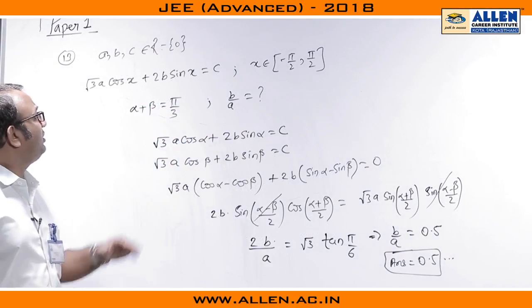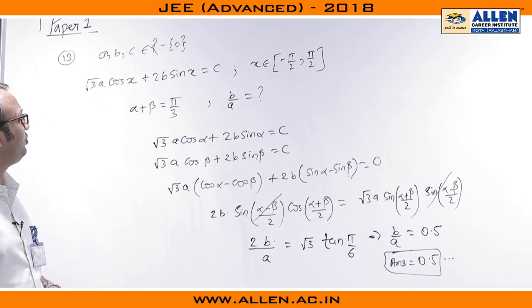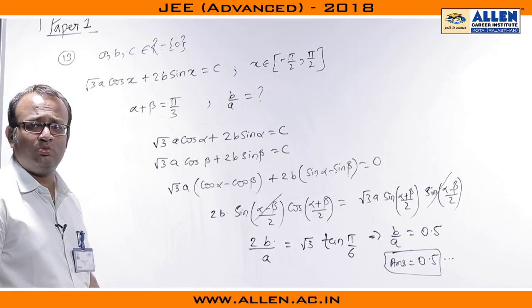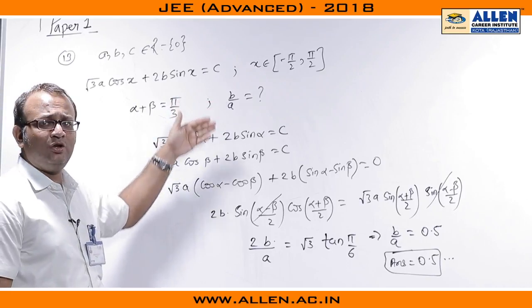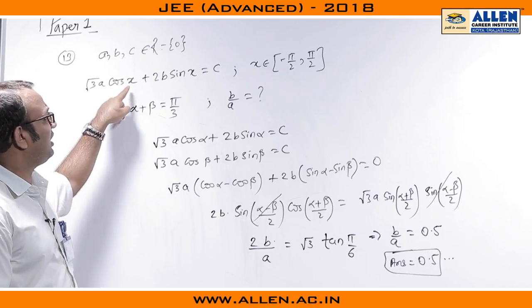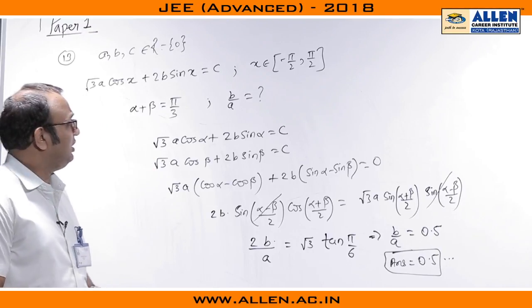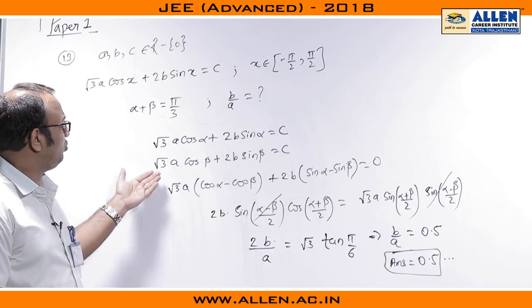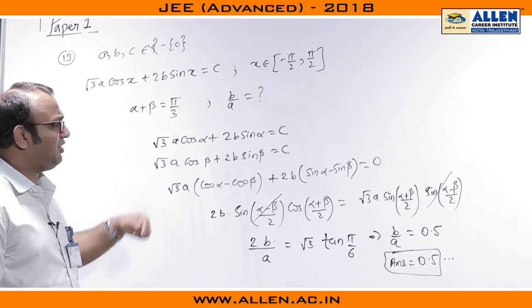In paper 1 question number 13, A, B, C are real numbers excluding 0 and we are given a trigonometric equation root 3 A cos x plus 2 B sin x equal to C and the value of X belongs to minus pi by 2 to pi by 2. Alpha plus beta is given to be pi by 3 and we are asked the value of B by A. Since alpha is the solution of this equation we can start by putting alpha into this equation and we get root 3 A cos alpha plus 2 B sin alpha equals to C. In the similar manner beta is the root of this equation. So we can substitute the value of beta here and we get root 3 A cos beta plus 2 B sin beta equal to C and we can then subtract the 2 equation to get rid of C.